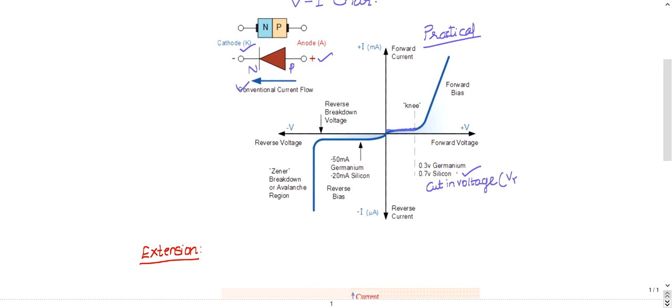The current will increase almost linearly from this point. For germanium it is 0.3 volts, for silicon it is 0.7 volts.